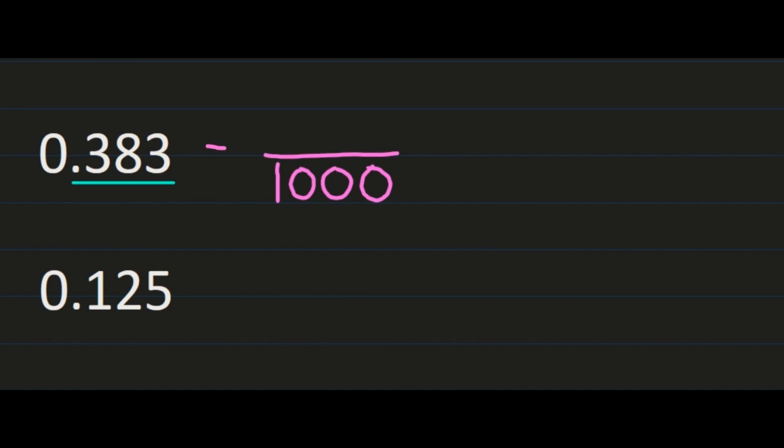For the next example, we have 383 thousandths. Even though the decimal is longer, we take the same steps. The final digit — that last 3 — is in the thousandths place, so the denominator is 1,000 and 383 is the numerator. We check if 383 and 1,000 share any common factors, and in this case they don't. So 383 thousandths is equal to 383 over 1,000.